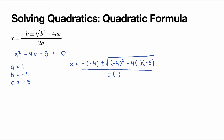We can simplify this slowly. Negative of negative 4 simplifies to 4. We have plus or minus the square root of negative 4 squared, which is 16 — remember, the square of a negative number is positive. Then negative 4 times 1 times negative 5: the negatives cancel, giving 4 times 5, which is 20. So we have 16 plus 20, all divided by 2 times 1, which is 2. That gives us 4 plus or minus the square root of 36, all divided by 2.